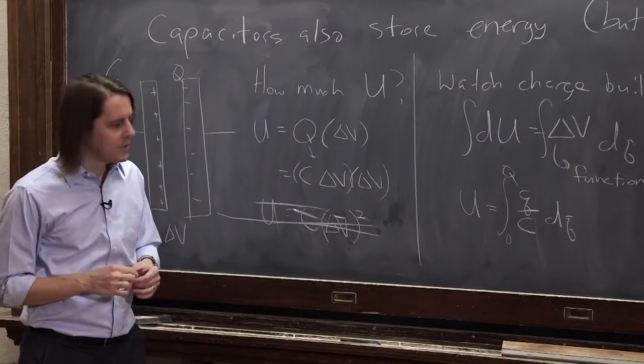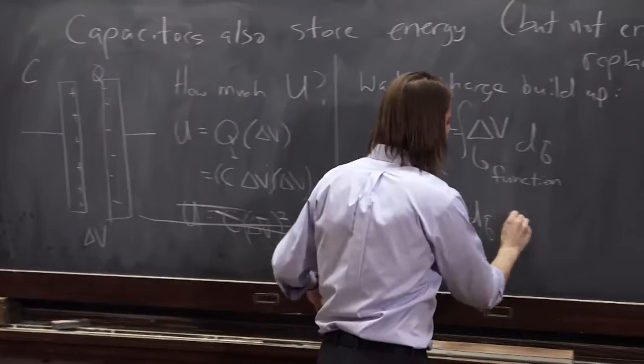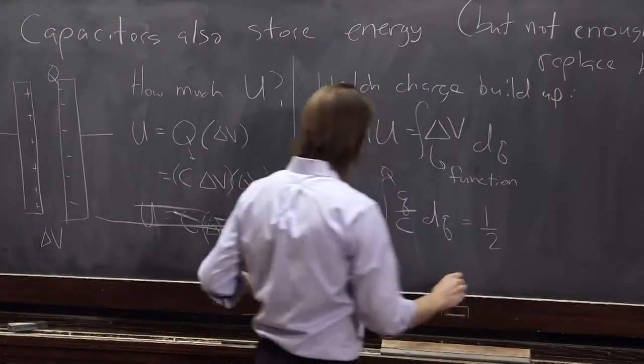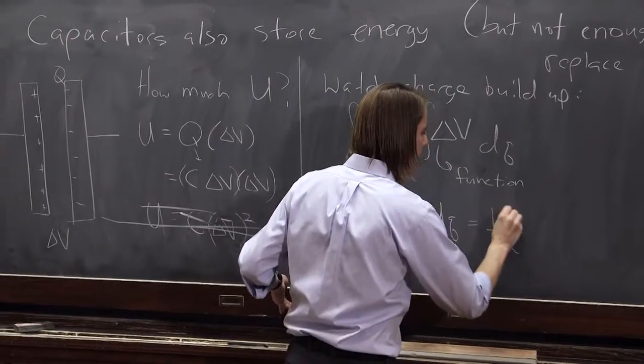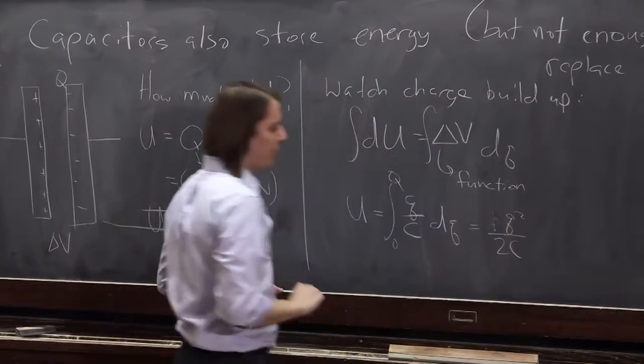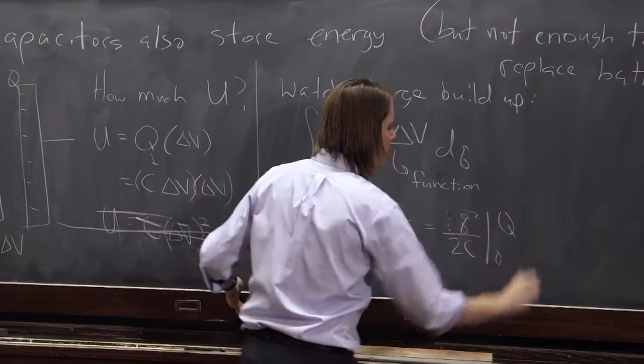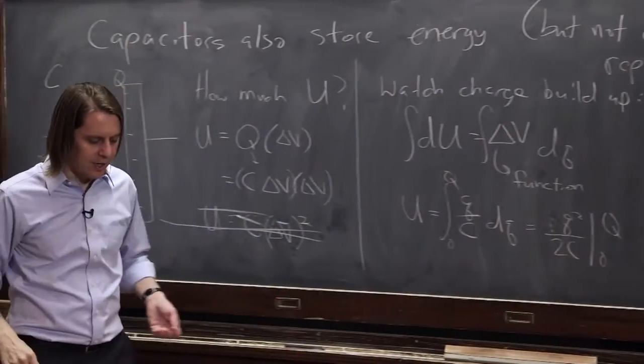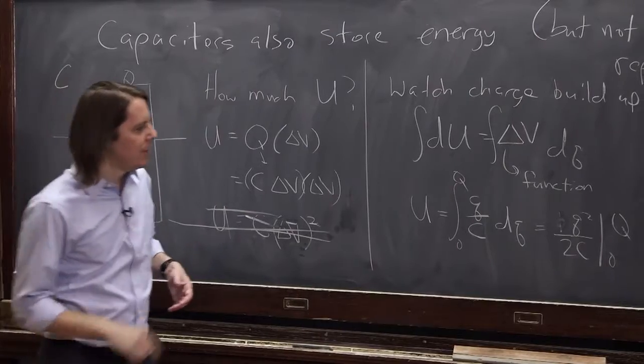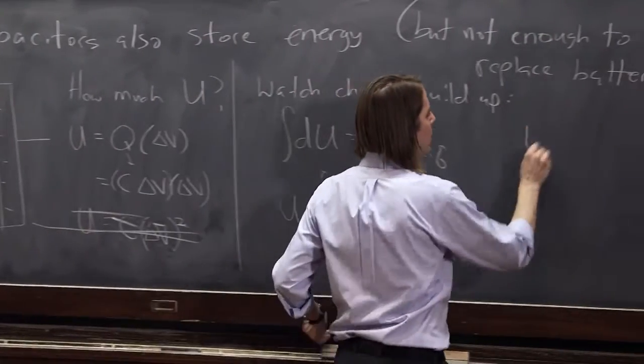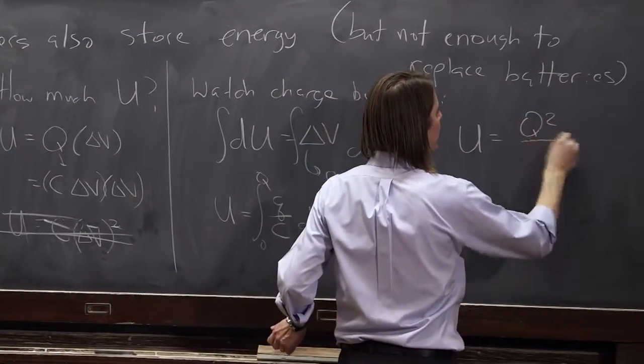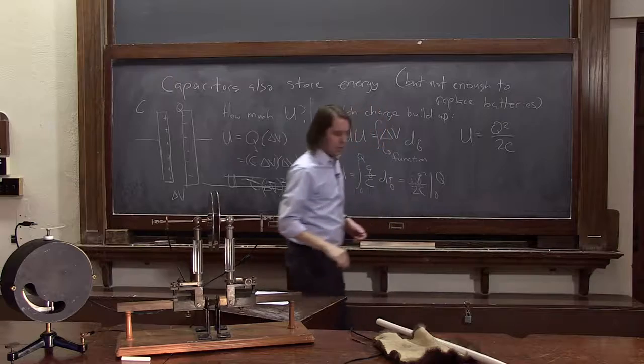There you go. So do this integral, and it's equal to one-half, one over 2C, Q squared over 2C, if you do that integral, evaluated from zero to big Q, like that. Of course, the zero gives you zero. So you get that the energy is Q squared over 2C.